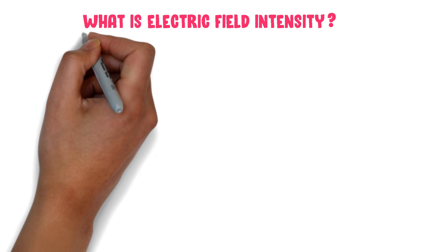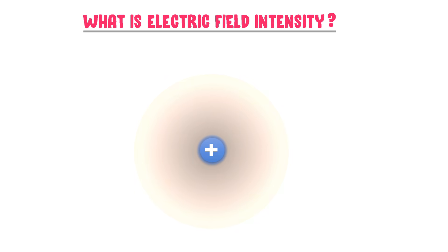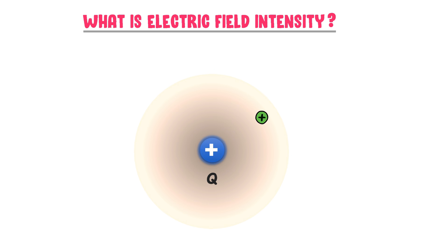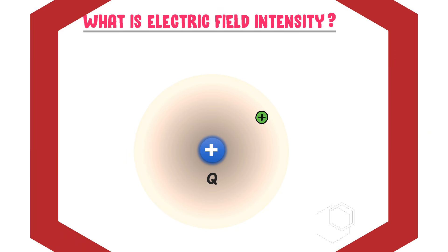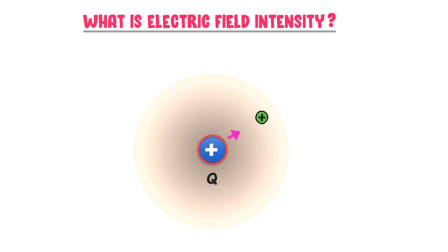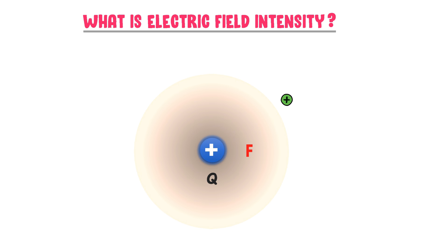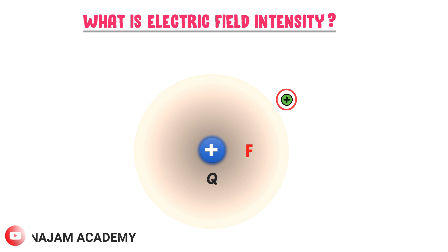Now, what is electric field intensity? Consider a big positive charge Q. There will be electric field around this charge Q. If I bring a positive test charge small Q inside the electric field of this charge, this positive charge will exert a force F on the test charge. When charge Q exerts force on the test charge, it will move away. So the positive test charge experiences force F in the electric field.